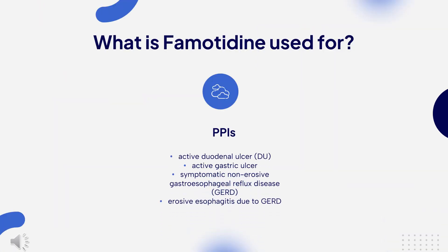Famotidine is indicated in pediatric and adult patients with a body weight of 40 kg and above for the management of active duodenal ulcer (DU), active gastric ulcer, symptomatic non-erosive gastroesophageal reflux disease (GERD), and erosive esophagitis diagnosed by biopsy. It is also indicated in adult patients for the treatment of pathological hypersecretory conditions such as Zollinger-Ellison syndrome, multiple endocrine neoplasias, and reduction of the risk of DU recurrence.